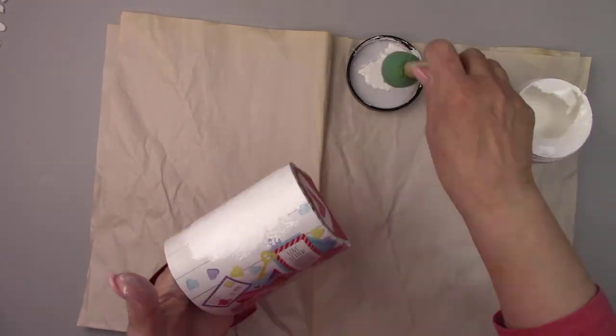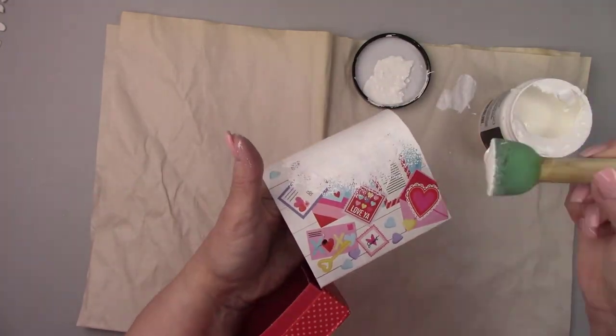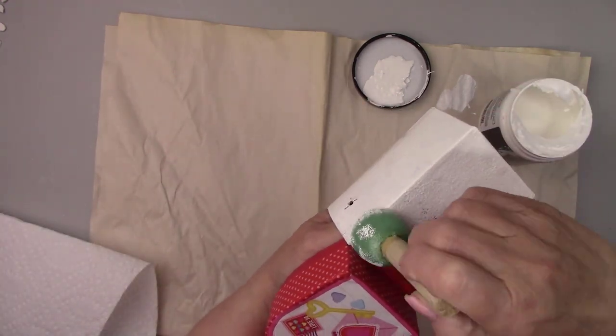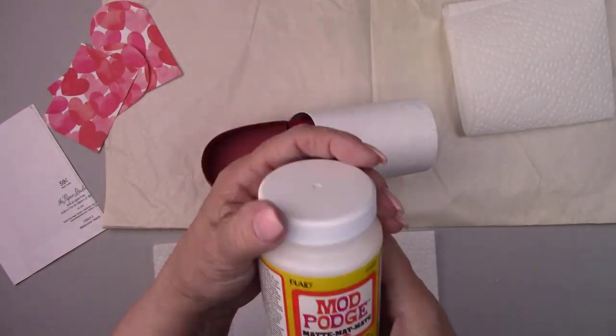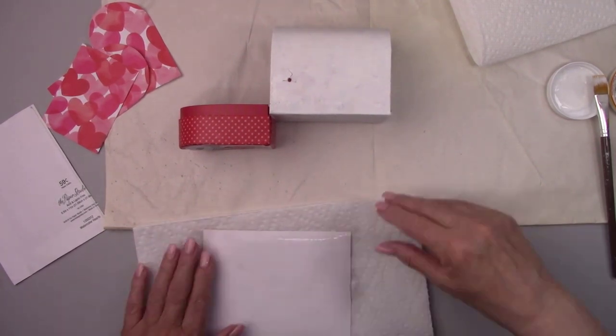There's a lot going on on this box and I don't want any of it to show through my paper. So I'm giving it a coat of white paint and I'll let that dry for about an hour. I'm spraying the paper with some water so it will bend easier when I need it to.